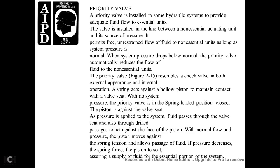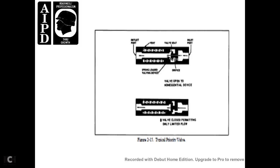Priority Valve. A priority valve is installed in some hydraulic systems to provide adequate fluid flow to essential units. The valve is installed in the line between the non-essential actuating unit and the source of pressure. It permits free, unrestrained flow of fluid to the non-essential unit when system pressure is normal. When system pressure drops below normal, the priority valve automatically reduces the flow of fluid to the non-essential unit. The priority valve resembles a check valve in both external appearance and internal operation. The spring acts on a hollow piston which maintains contact with the valve seat. With no system pressure, the spring-loaded piston is held against the valve seat. When pressure is applied, the fluid passes through the valve seat and through drilled passages to act against the piston face. At normal flow and pressure, the piston moves against the spring tension, allowing passage of fluid. If pressure decreases, the spring forces the piston to the seat, ensuring fluid supply to the essential portion of the system.